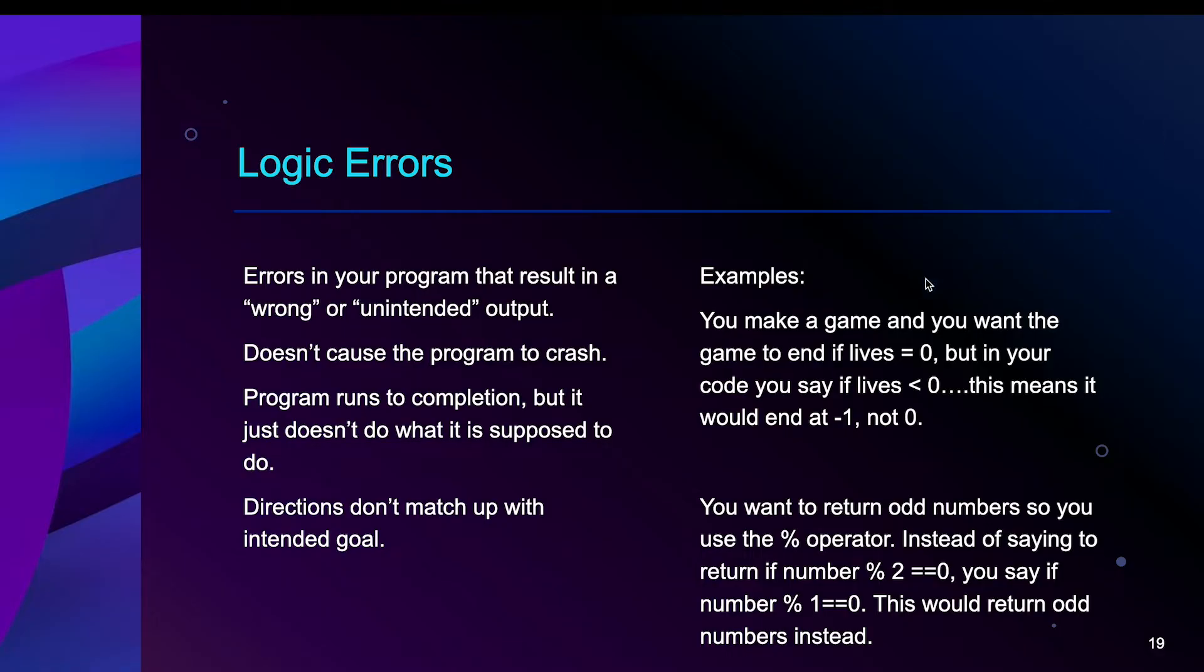So an example, if you are making a game, and those of you that have used code.org, this might look familiar, and you want the game to end if lives equals zero, but in your code you say if lives less than zero. That would be an example of a logic error because technically zero is not less than zero, so if your lives were zero in this case, it would not end. You would have to get to negative one.